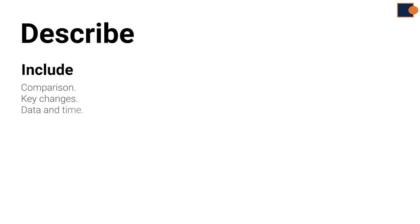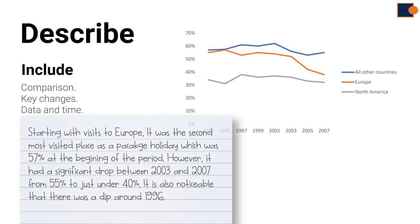Part 4 Details. So body part is all about describing the graph in detail. For this you need to include comparison, key changes, data and time. Here you can describe each trend separately by comparing, writing key changes, and always try to support with data and time.